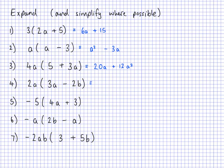Now the next one, I've got a and b as well. So 2a needs to multiply to each thing inside — remember this is negative 2b. So 2a times 3a is 6a squared. And then 2a multiplied by negative 2b: that's negative 4ab, because 2 times negative 2 is negative 4, and a times b is ab.